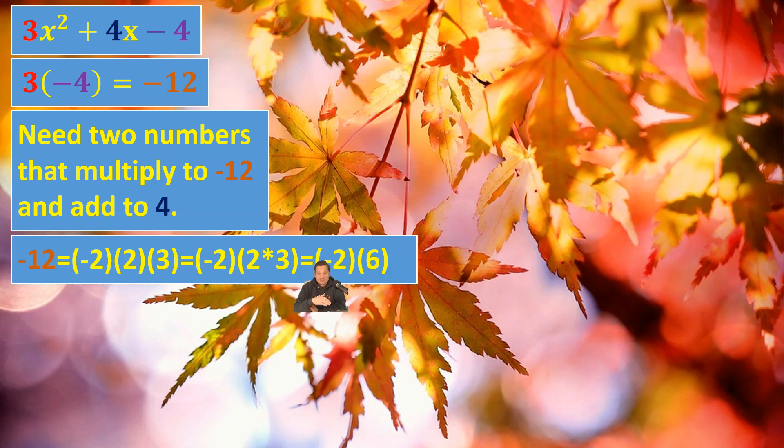This stage, depending on whether the value of AC is big or small, can be quite time consuming. So if you have like a 96 that you have to break down, this could be a very long process here. Okay, that's why I chose -12. It's reasonable, but not too easy, I think.